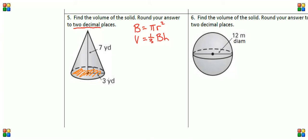That means in this case, 3 yards actually is the radius—they give us the radius of the base—and 7 yards is the height of the cone.